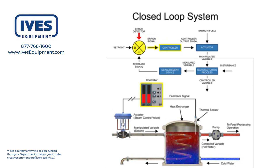The controller is the brain of the system. It receives an error signal as its input and provides an output signal to the final control element, or actuator, in this example. A signal from the controller causes the controlled variable to match the set point using the actuator of the system.